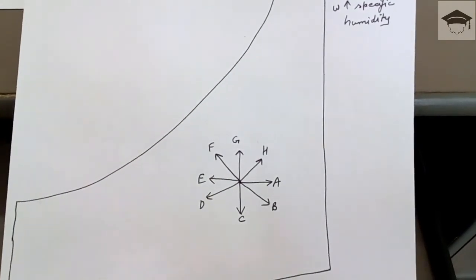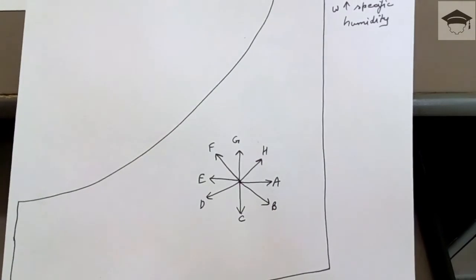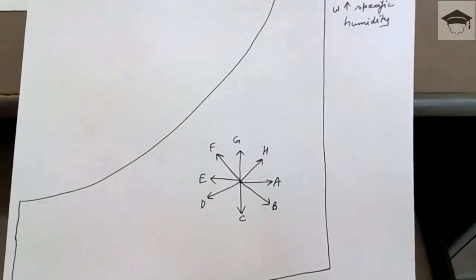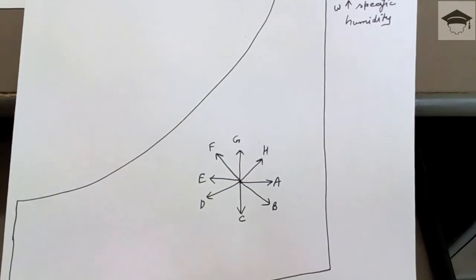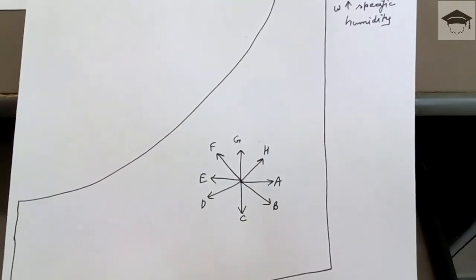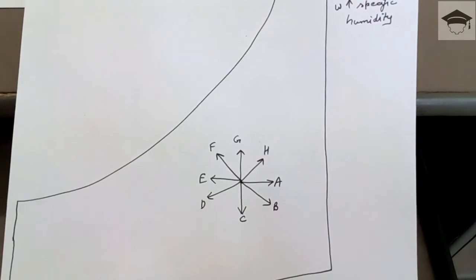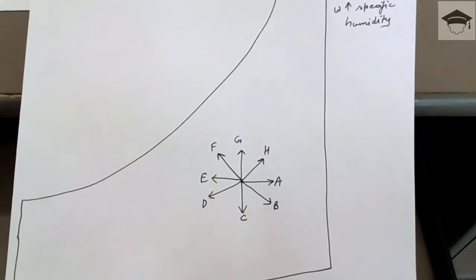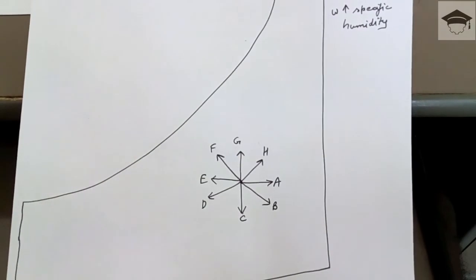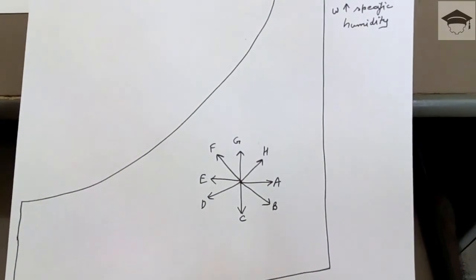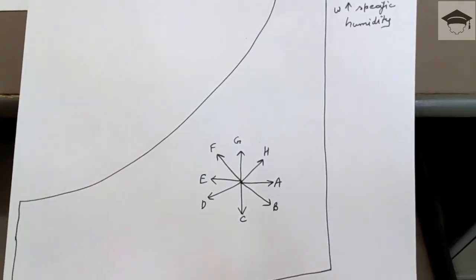Process G is known as the humidification process, in which the dry bulb temperature remains constant and the specific humidity increases. Process C is known as the dehumidification process, in which the specific humidity decreases while the dry bulb temperature remains constant.